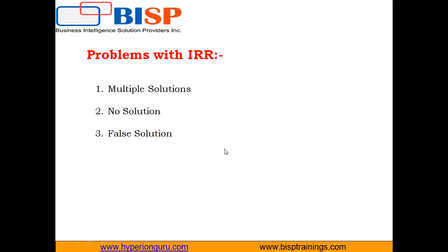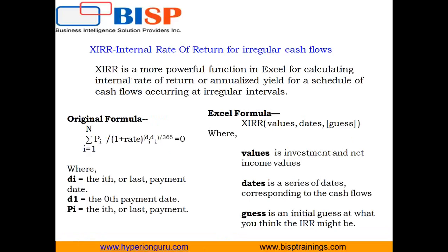The next function is XIRR, which stands for the internal rate of return for irregular cash flows. IRR does not handle payments at irregular intervals, so in that case we use XIRR. The only difference between XIRR and IRR is that IRR considers periods of equal duration (year 1, year 2, year 3), while XIRR allows periods with different durations. XIRR returns the internal rate of return for a series of cash flows — including an initial investment and net income values — which are not necessarily periodic.